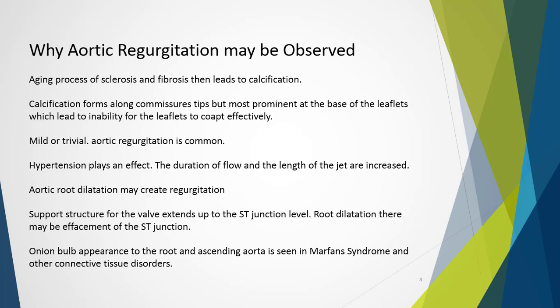Why do we see aortic regurgitation as part of an aging process? We see a lot of sclerosis and fibrosis associated with the aortic valve over time. Significant scarring and the body's process of healing that scarring leads to calcification. This calcification can be accelerated by genetic predisposition, diet, lifestyle, and smoking. Renal dysfunction and abnormal calcium metabolism may also accelerate this process. Calcification forms along the commissures but mostly at the base of the leaflets, which leads to an inability for the leaflets to co-apt effectively.